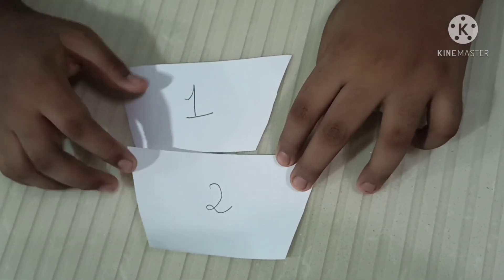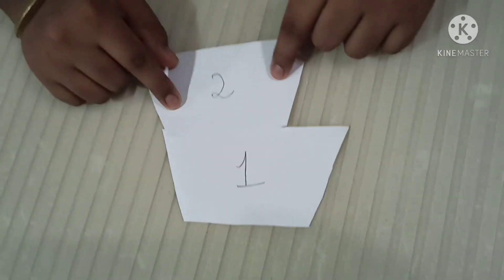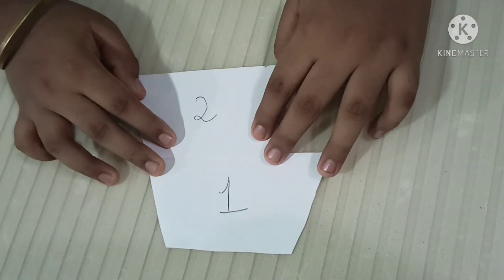I can also repeat that if I take the smaller paper and put it below, it becomes bigger. So now why does this happen?